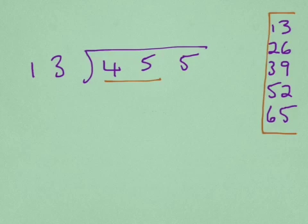So I'm looking at 13 into 45. If I look over at the side here, I can see that 39 is the one, 52 is too many, so that goes in three times.